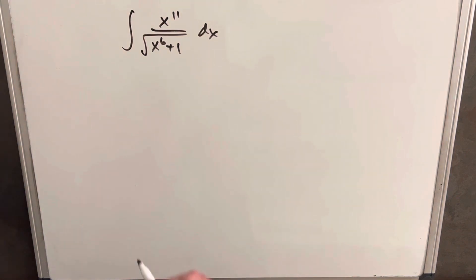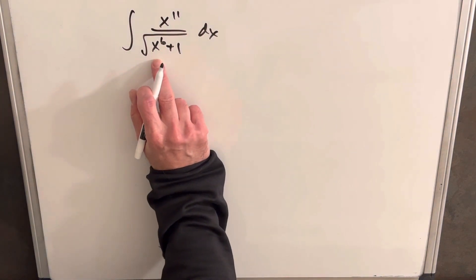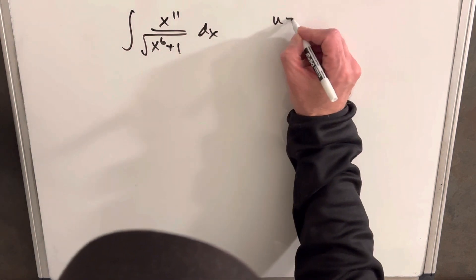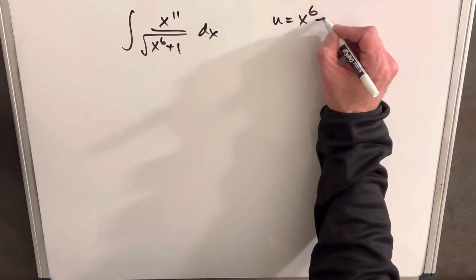We could do a substitution for x cubed here, and then we have a square term, but I think it's actually going to be easier if we just take our u to be x to the 6th plus 1.